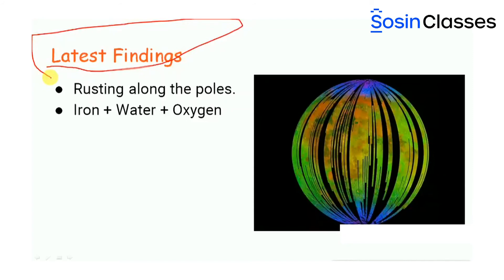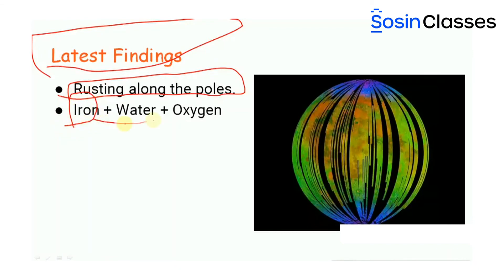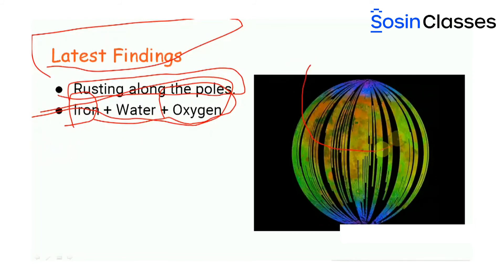Union Minister Jitendra Singh said that images sent by Chandrayaan-1 suggest the moon may be rusting along the poles. Rusting is an oxidation reaction in which iron reacts with water in the presence of oxygen to form hydrated iron oxide (rust). The surface of the moon is known to have iron-rich rocks, but water and oxygen — which are needed to create rust — are not known to be present there.